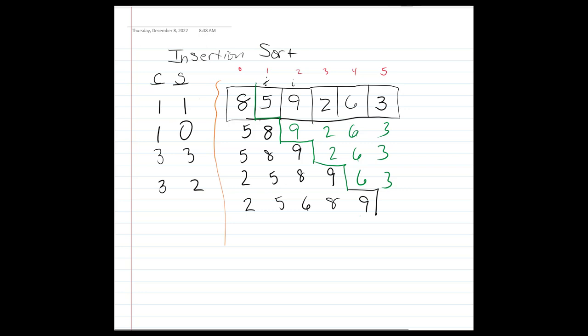We have one element left in the unsorted array: three. For three: comparison against nine and swap, comparison against eight and swap, comparison against six and swap, comparison against five and swap, comparison against two and no swap. That's five comparisons and four swaps.